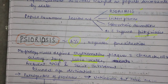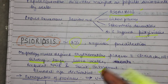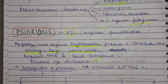Psoriasis will be found in bimodal age distribution — there are two age groups commonly affected, like the age group around 25 and a middle-age group. These age groups are very commonly affected. So it will be found in bimodal age distribution.